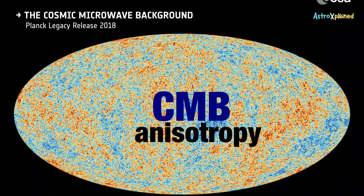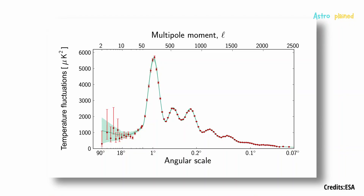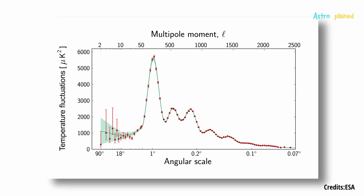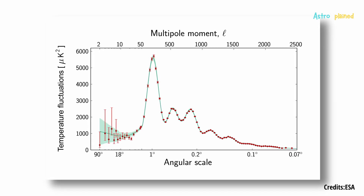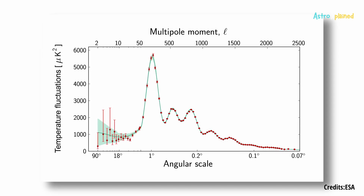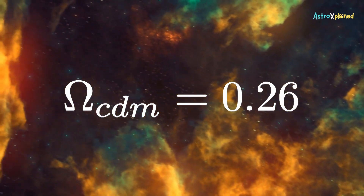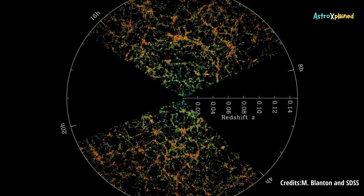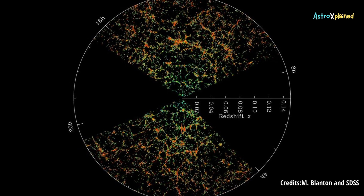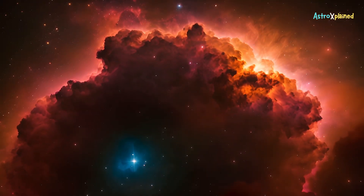Cosmic microwave background anisotropy measurements from WMAP and Planck provide independent cosmological-scale evidence. The angular power spectrum, particularly the relative amplitudes of the acoustic peaks, is highly sensitive to the matter-energy content of the universe. Fitting the data within the Lambda-CDM framework yields a cold dark matter density of 0.26. Moreover, the large-scale structure of the universe, as mapped by surveys like SDSS, exhibits a filamentary distribution of galaxies — the cosmic web. Simulations incorporating cold dark matter reproduce this morphology with remarkable fidelity, whereas baryon-only models fail to generate sufficient clustering within the observed timescales.